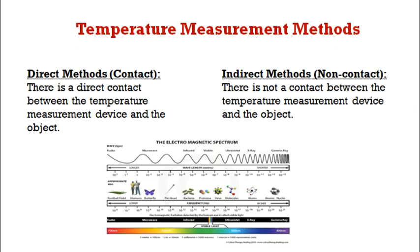We can also divide temperature measurement methods as direct methods or indirect methods. When you consider direct methods, as the name implies, there is a contact between the temperature measurement device and the object, whereas in the indirect method, there is no contact in between.